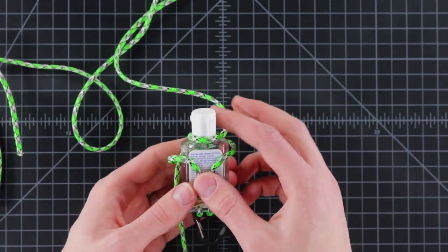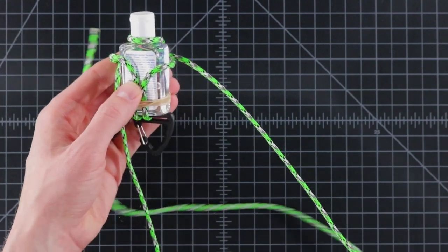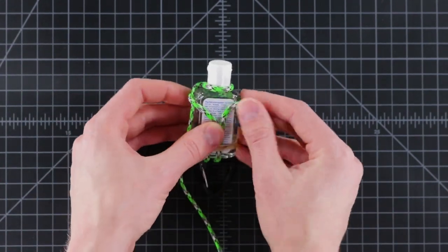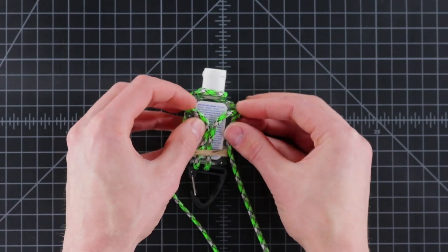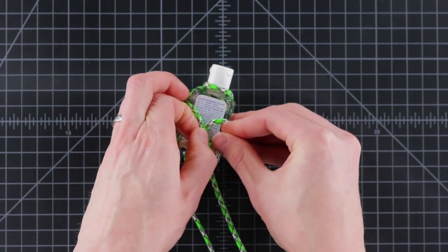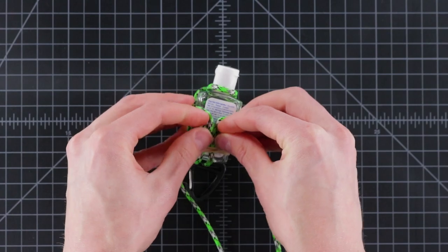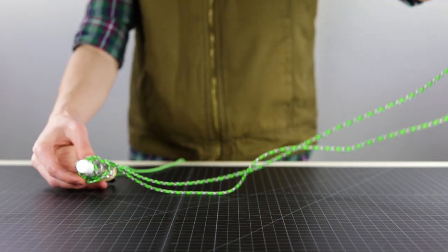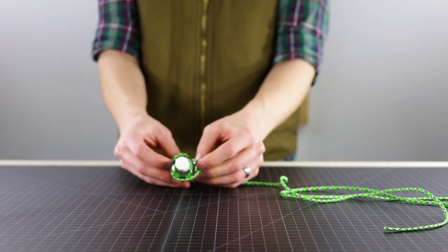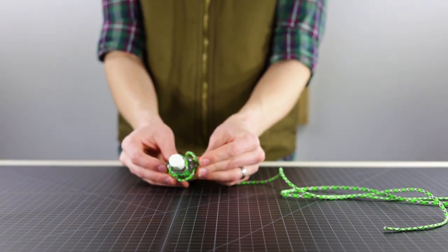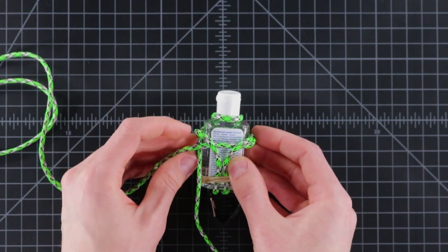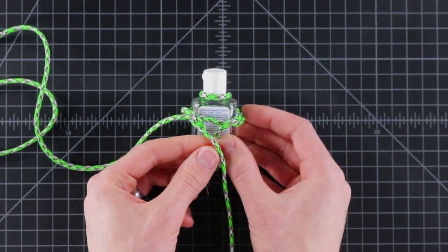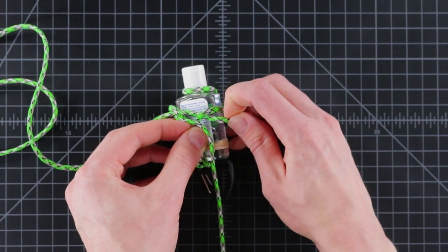So now flipping it back over. We've got our Y on this side. So now with our right cord again, go underneath your two center strands. Pull that cord through. And now with this left side cord, it's going to go over the top, but then again, down through this loop.